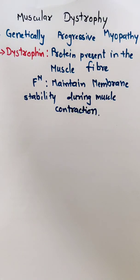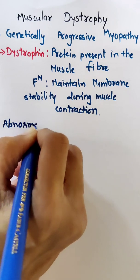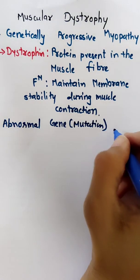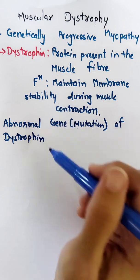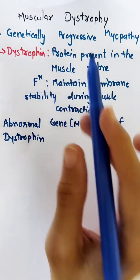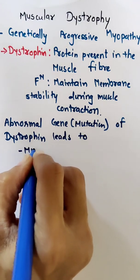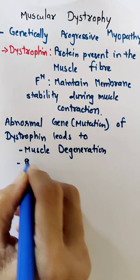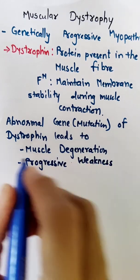In the case of muscular dystrophy, there is an abnormal gene mutation of the dystrophin protein. Because of this abnormal dystrophin, it may lead to muscle degeneration, progressive muscle weakness, and loss of muscle mass.